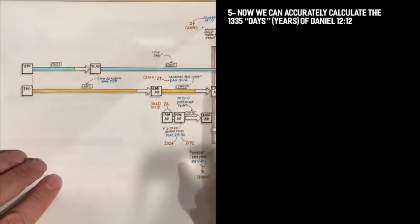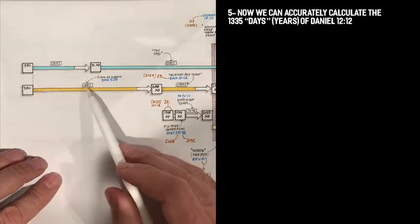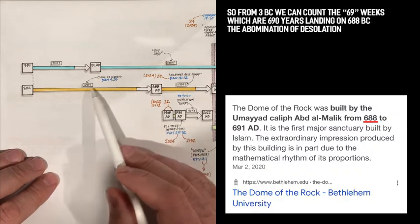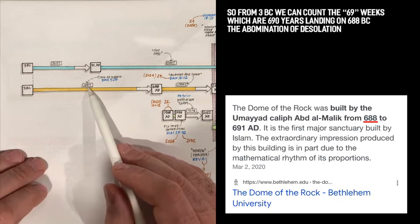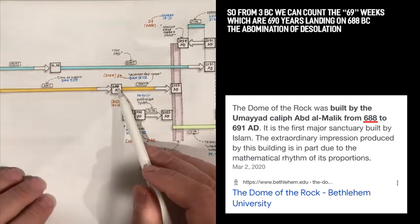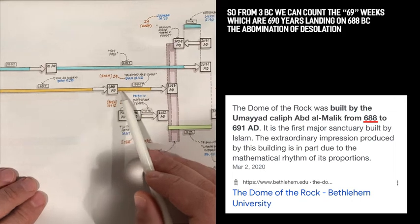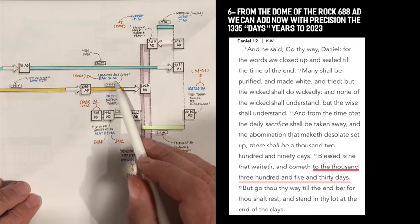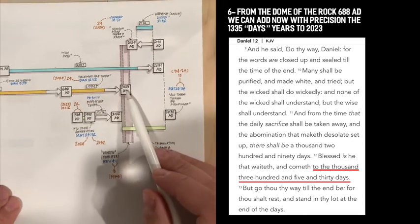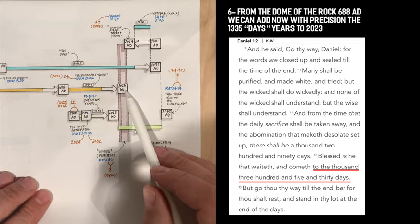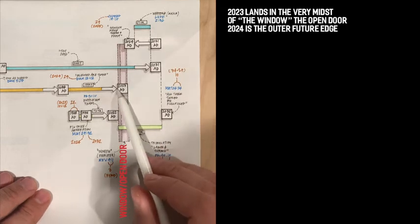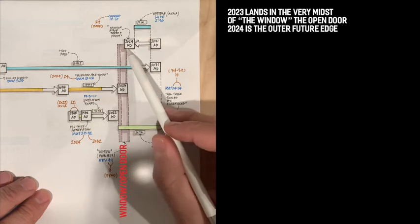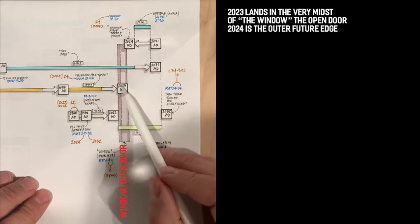Second piece. We're going to go back to 3 BC. 3 BC. We're going to add the 69 weeks of Daniel, which is the 7 and 62 weeks, 690 years. That will take us to 688. That stays the same. And then from 688, we add 1335 years. That's the Daniel 12:12. That's also staying the same. And that's also going to stay the same to 2023. Now you see that the window, 2023, lands right into the window. Its edge will be 2024. Its middle will be 2023.